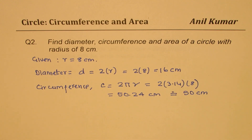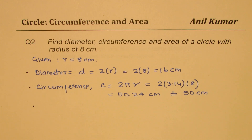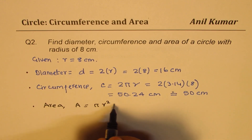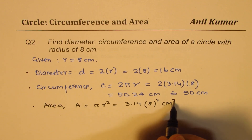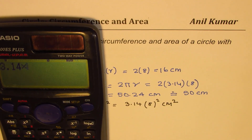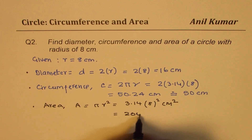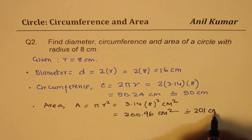That is approximated as 50 centimeters. Sometimes you may have to approximate — if nothing is specified, I'm approximating to whole numbers. Lastly, let's find the area. Area A is πr squared, which is 3.14 times 8 squared, which is 64, with units centimeters squared. So we have 3.14 times 64, which gives 200.96 in decimals.